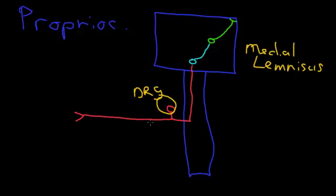This is a three-neuron system. The difference from spinothalamic is the pathway running up on the ipsilateral side through the spinal cord and that it crosses at the medial lemniscus.